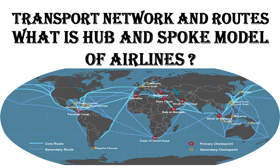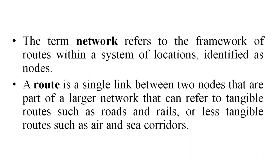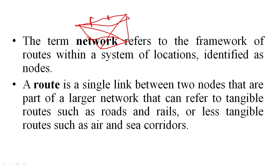We are going to talk about networks and routes in transportation logistics. First of all, what is a network and what is a route? A route is a single link between two nodes — A and B, that is a single route. A network is where this point is connected to that point, and that point is connected to another point. There are a number of points in a system; these points are called nodes. A number of nodes connected to each other forms a network, and a route is simply one connecting link of two places within the larger system.